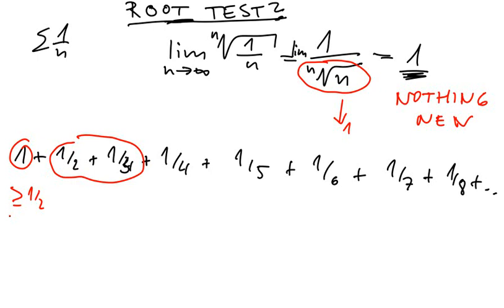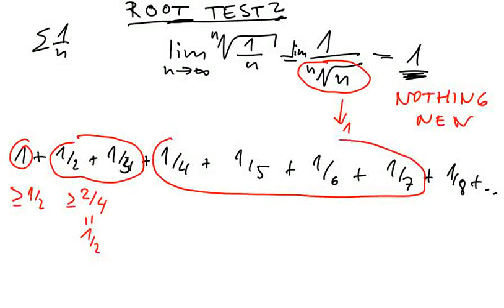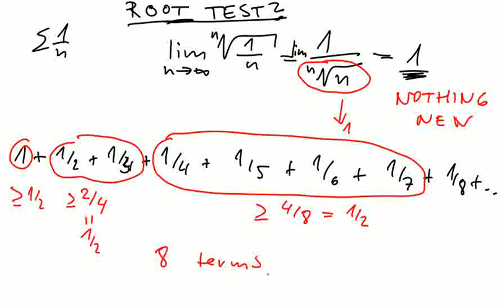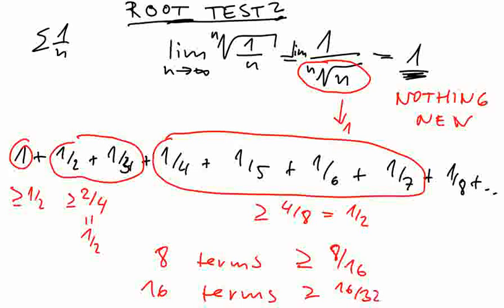Now we will take two more terms and these two terms are at least 2 over 4. Each of them is at least 1 over 4, so this is nothing else than 1 over 2. Now we can take the next four terms and all of them are larger than 1 over 8, and we have four of them. So this is at least 4 over 8 which is 1 over 2. Then we take 8 terms, which will be at least 8 over 16, and then 16 terms at least 16 over 32.